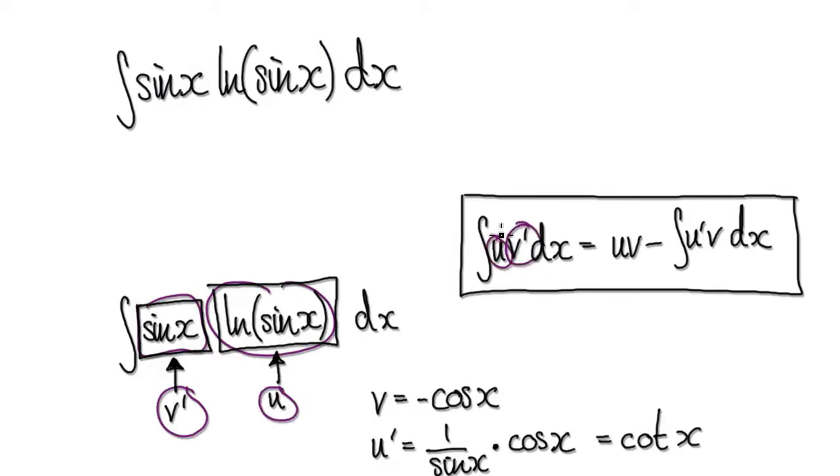So v prime u. So if this is v prime, then v will equal minus cos of x.